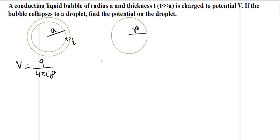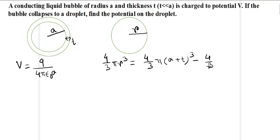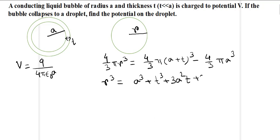We need to find the radius r of the droplet. The volume of the droplet (4/3)πr³ equals the volume of the bubble shell: (4/3)π(a+t)³ minus (4/3)πa³. Expanding, r³ = a³ + t³ + 3a²t + 3at² − a³.